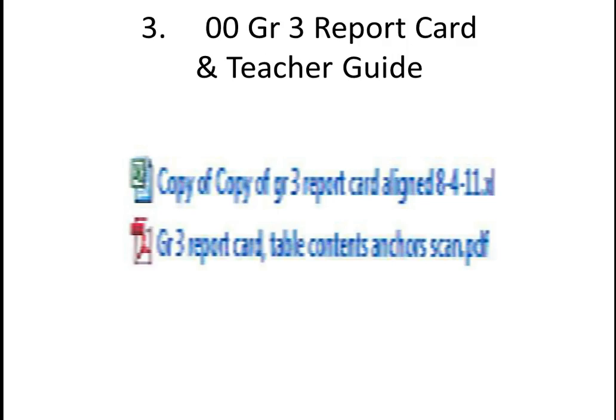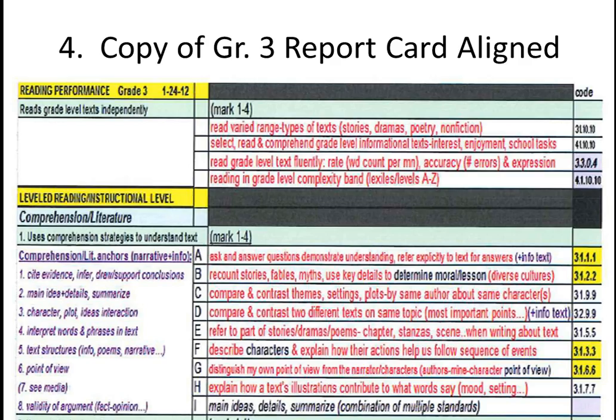The first folder is divided into two sections. The first has a teacher's copy of the report card that has the Reading Language Arts Standards aligned with the reporting standards. Along the right-hand side are the state standard codes. Yellow means it will be tested on the MCA-3s according to draft test specs, and purple is additional priority standards.